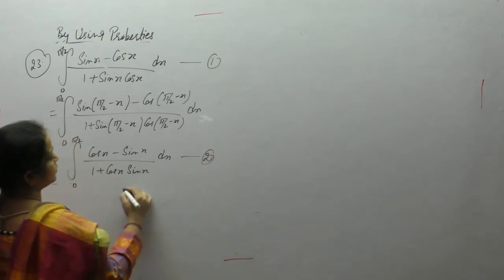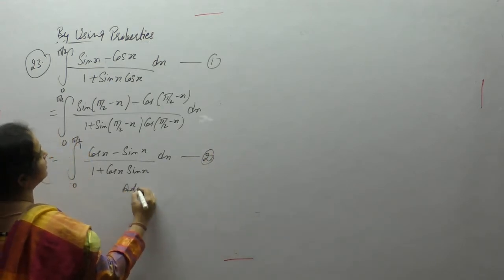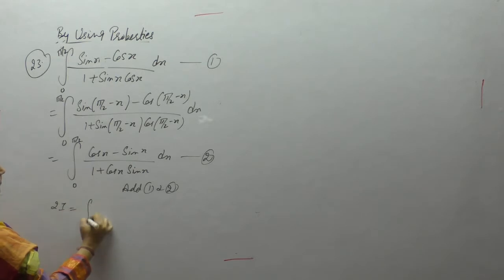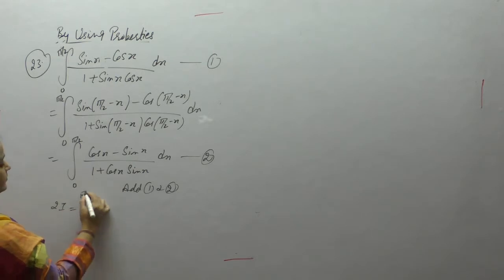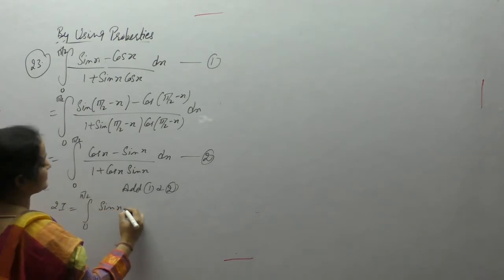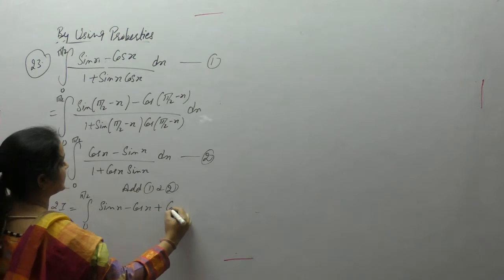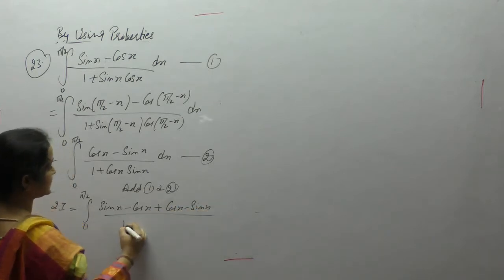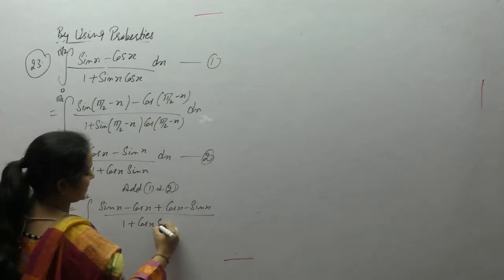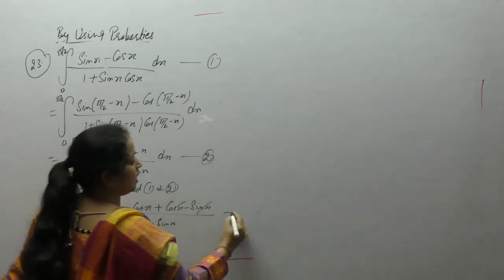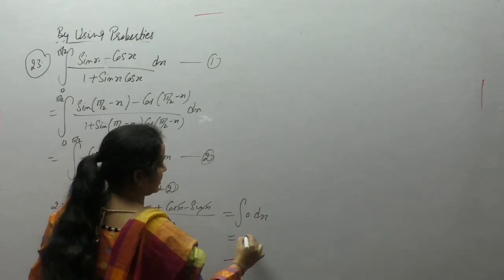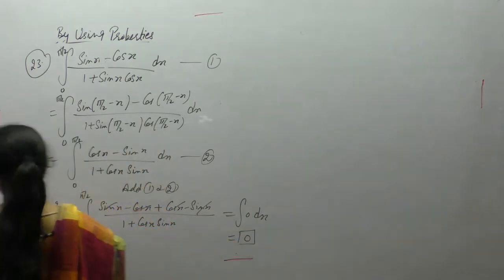Adding equations 1 and 2, the denominators are the same. The numerators give (sin x + cos x) + (cos x + sin x) minus (sin x + cos x), which simplifies so the numerator becomes 0. Zero divided by something is 0, and the integral of 0 is 0.